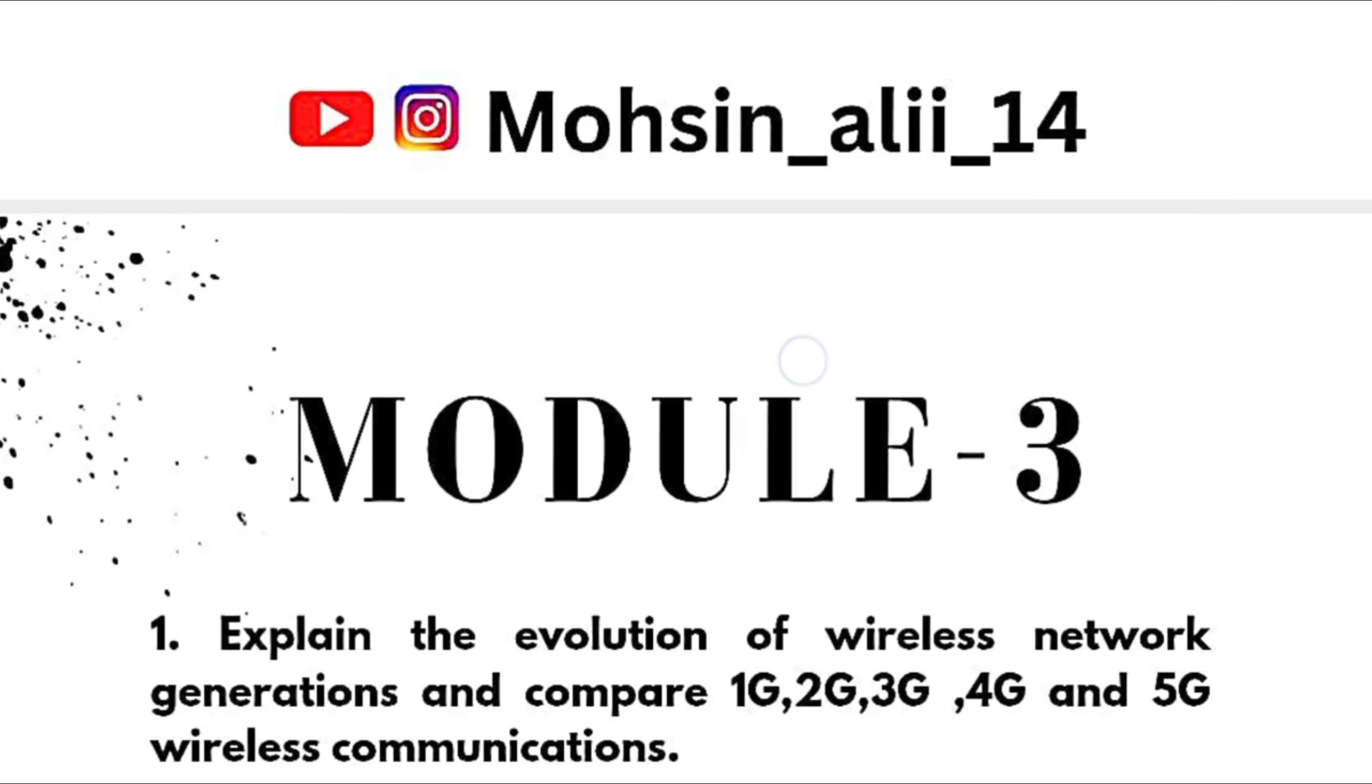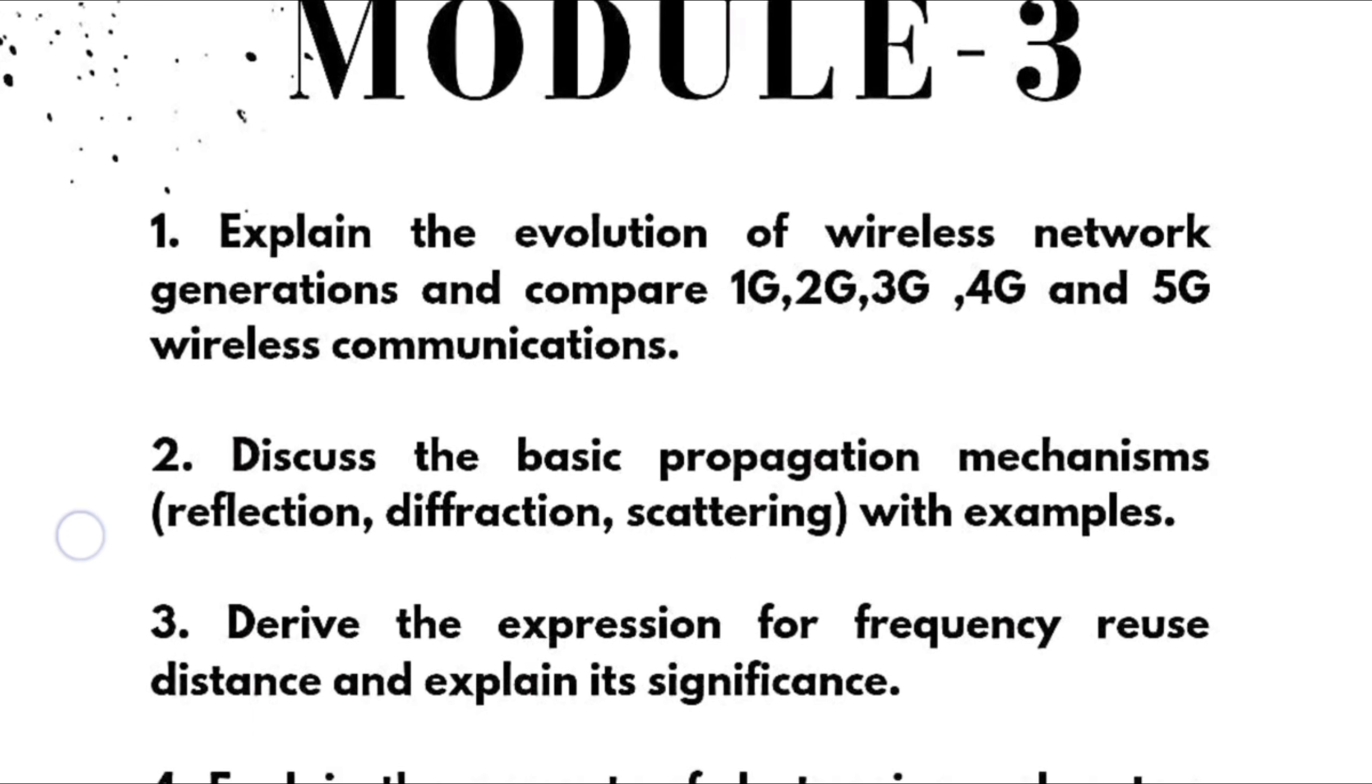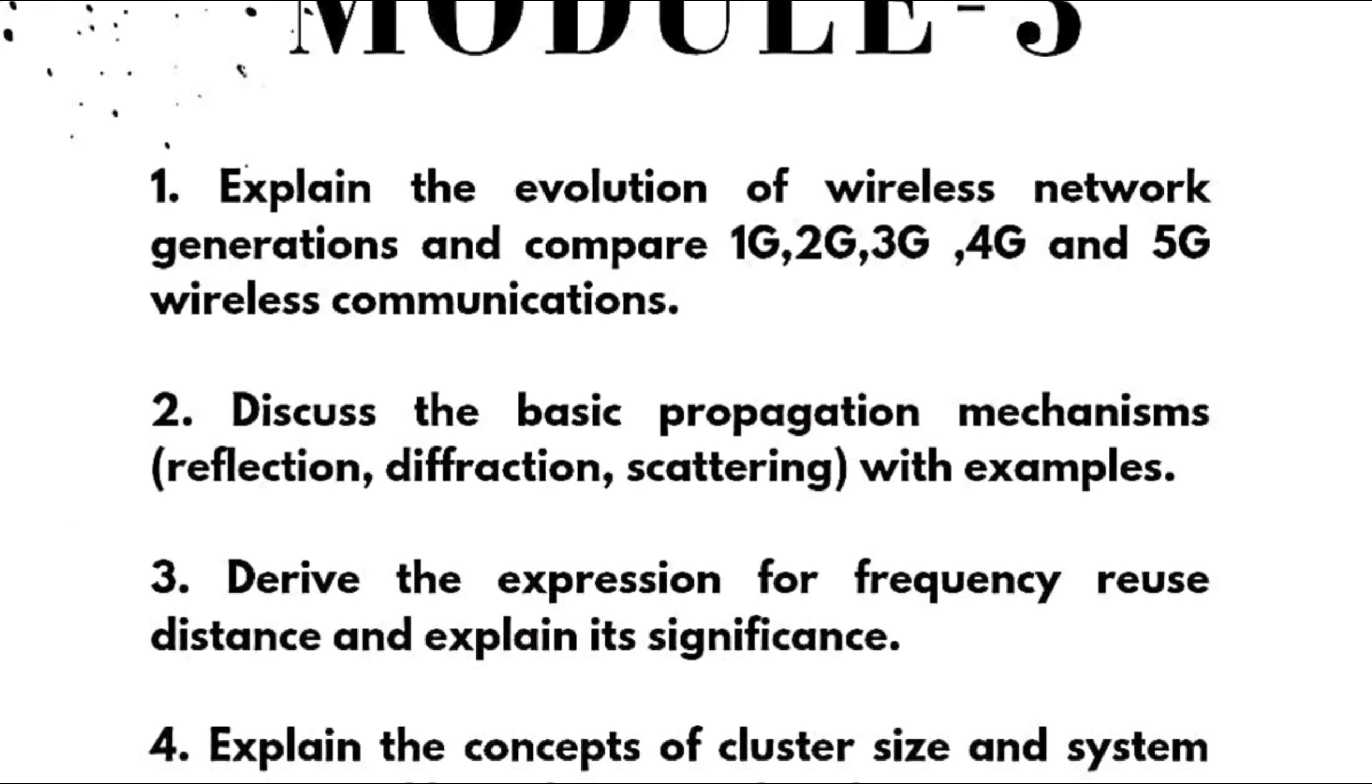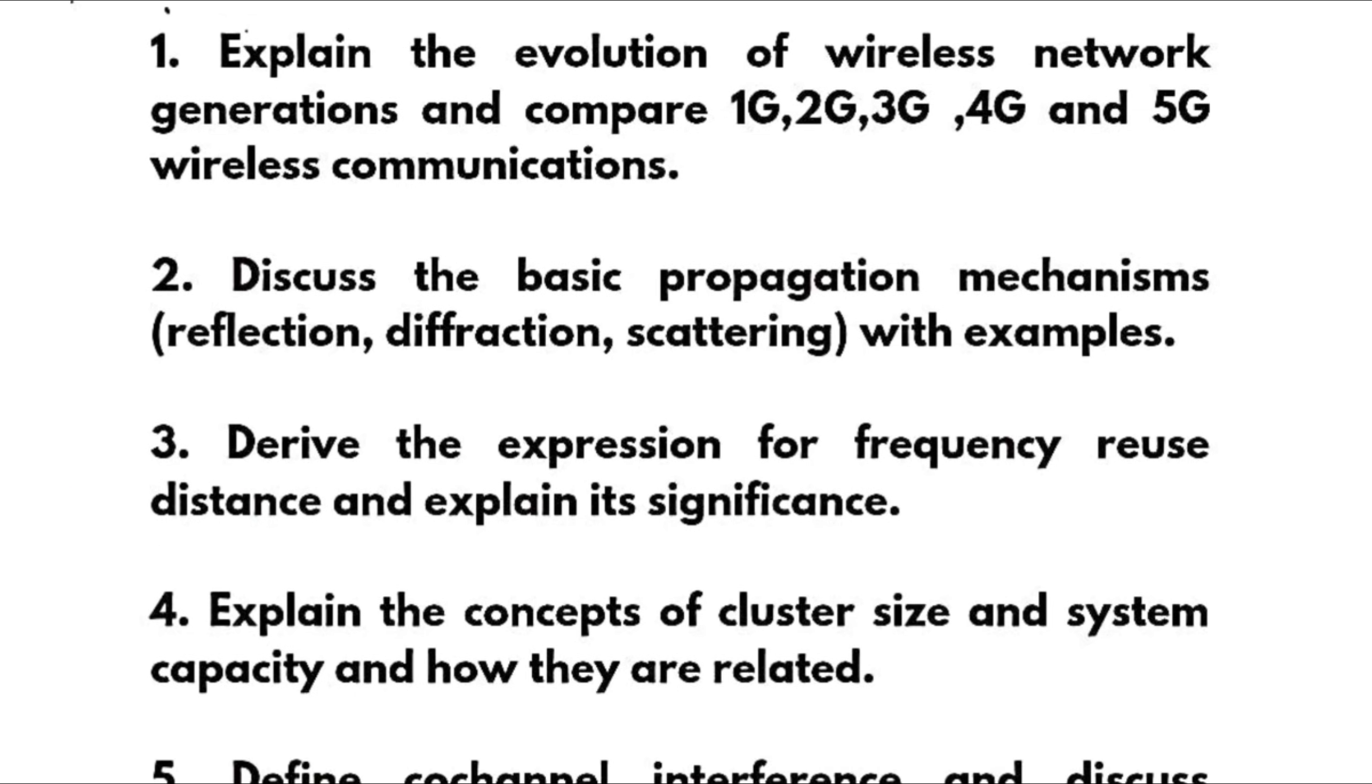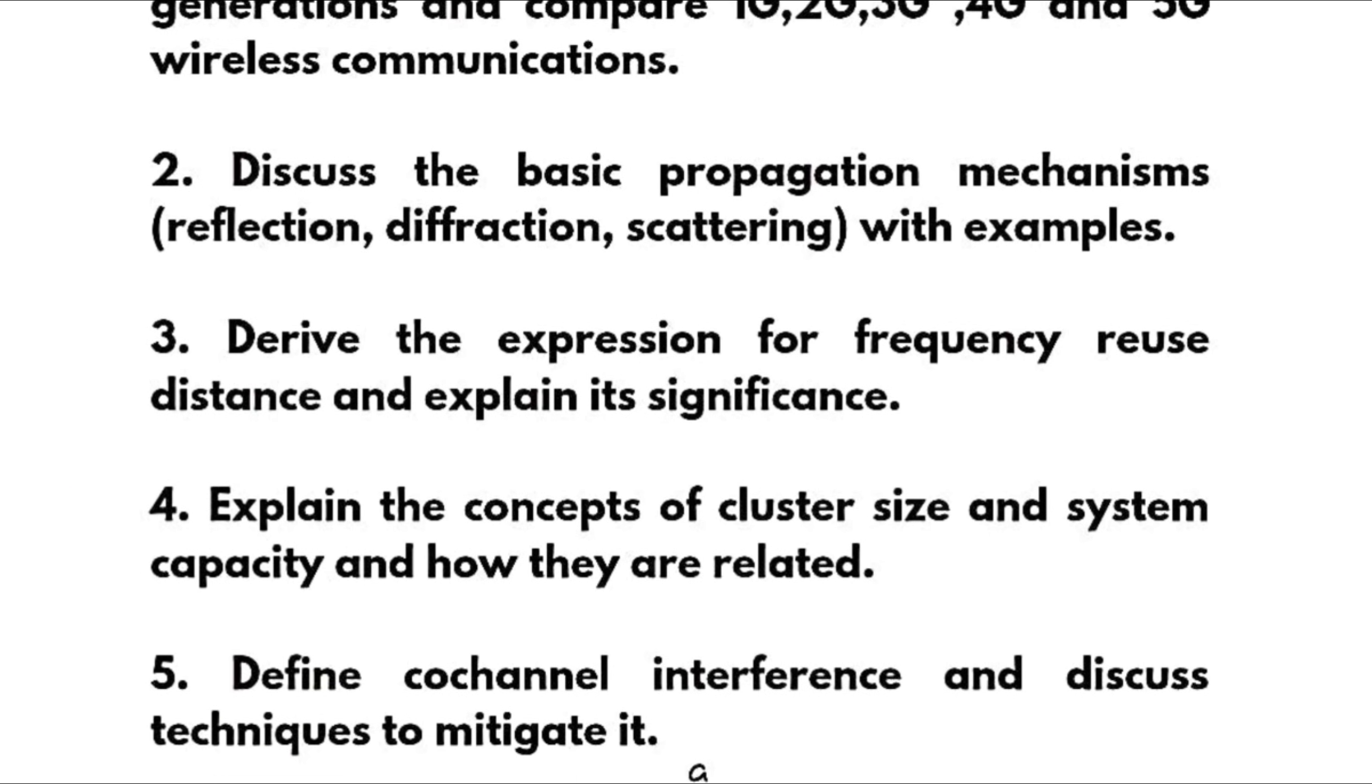Next we have Module 3: Explain the evolution of wireless network generations and compare 1G, 2G, 3G, 4G, and 5G wireless communications. Discuss the basic propagation mechanisms like reflection, diffraction, scattering with examples.